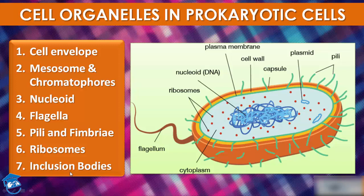A specialized differentiated form of cell membrane called mesosome is found, which is a unique characteristic of prokaryote cells. Mesosomes are essentially infoldings of the cell membrane. Sometimes the cell membrane infolds and that infolding is called mesosome.